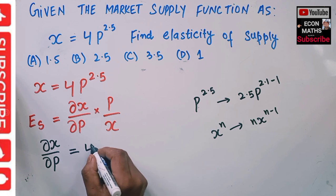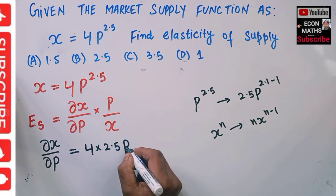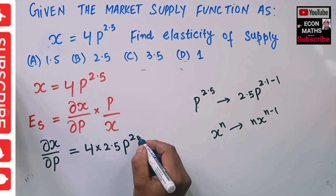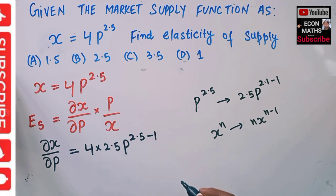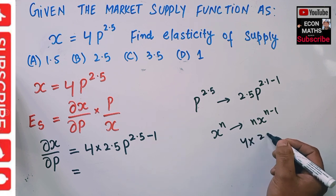This sums up to 4 × 2.5 × P^(2.5-1). So 4 × 2.5 comes out to—this is 4 × 2.5, which can be written as 25 upon 100.